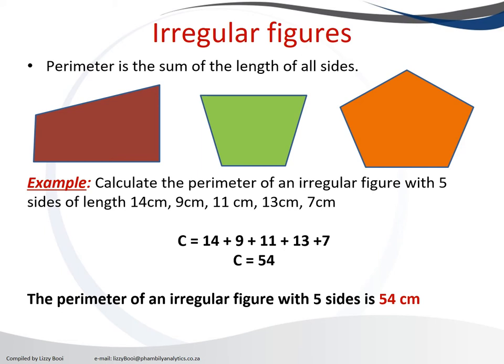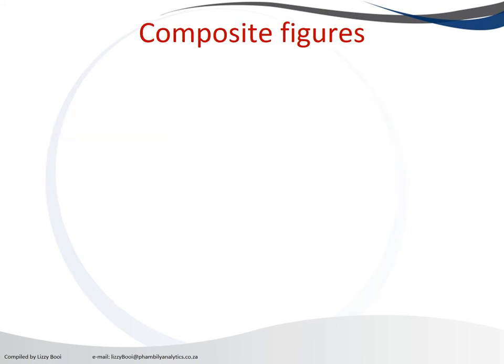Easy. But sometimes you don't get just irregular figures, you get what we call composite figures. It means they are built up by two figures together, so it can be a square and a triangle, or a square and a circle, or a triangle with a square. The composite figure means it's got multiple figures to it.